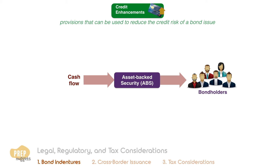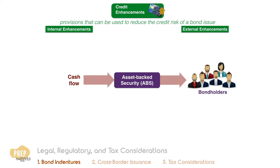There are two primary types of credit enhancements: internal and external. Internal enhancements are built into the structure of the bond issue, while external enhancements are provided by a third party.